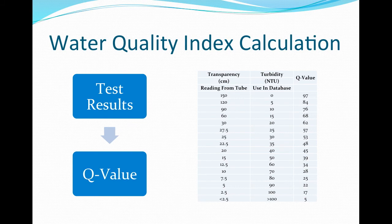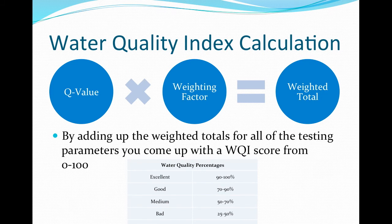To calculate the Water Quality Index score for a water sample, take the results of one of your measured parameters and use the tables to find the corresponding Q value. For instance, if we had a transparency of 25, our Q value would be 53. Once you have your Q values, multiply the Q value by the weighting factor for that parameter. Once the weighted Q value for each of the measured parameters are calculated, add the values together. The sum of these values should be 0 to 100, indicating the quality of the water body you tested.